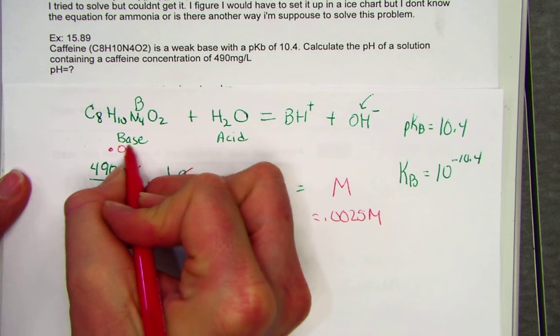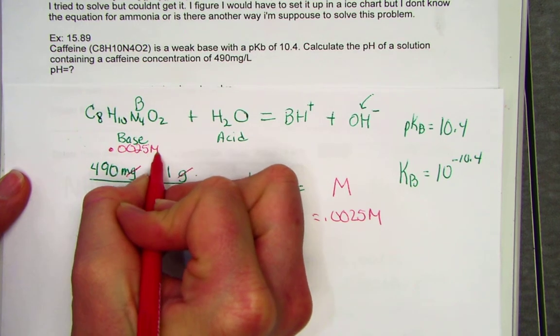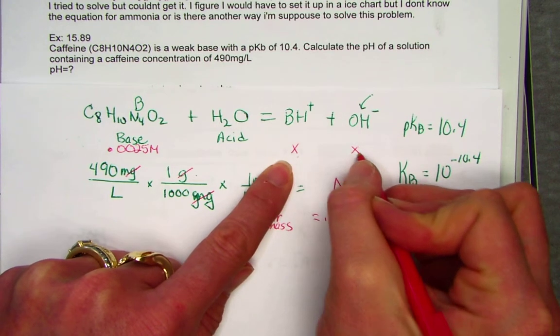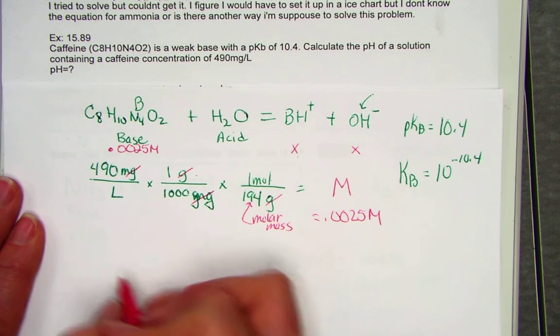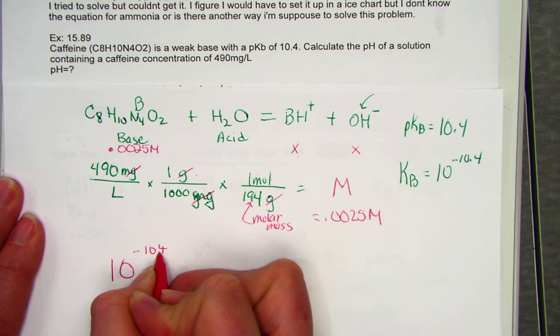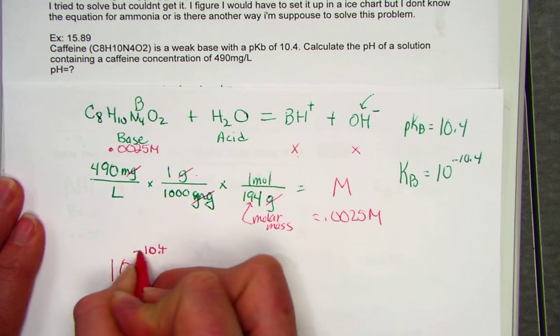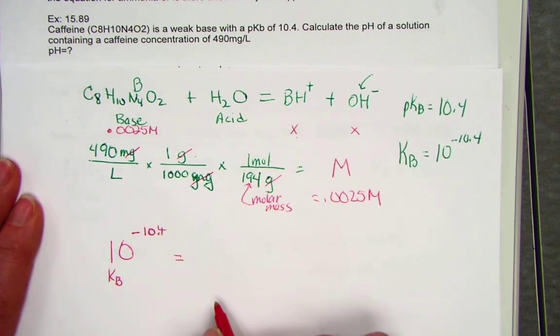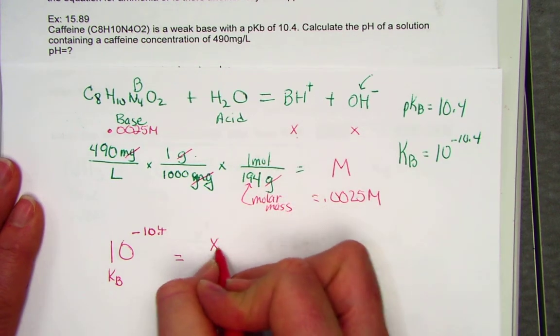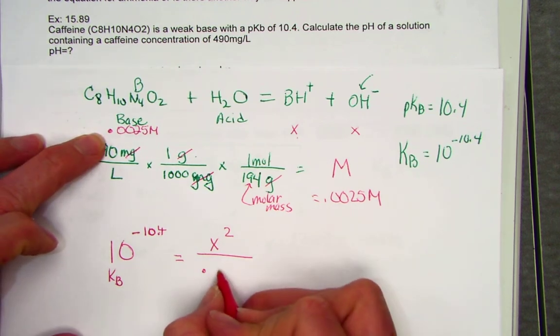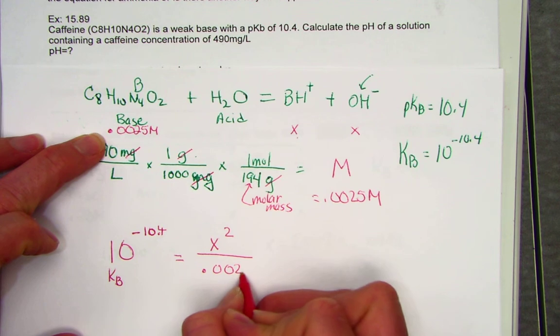So if this now has a value of 0.0025 molar, let's call the value of the conjugate acid X, and the value of the conjugate base X. The KB value is 10 to the negative 10.4. So that here is just the KB. That will be set equal to the value of X times X. I'll write that as X squared over the concentration of the original caffeine, 0.0025 molar.